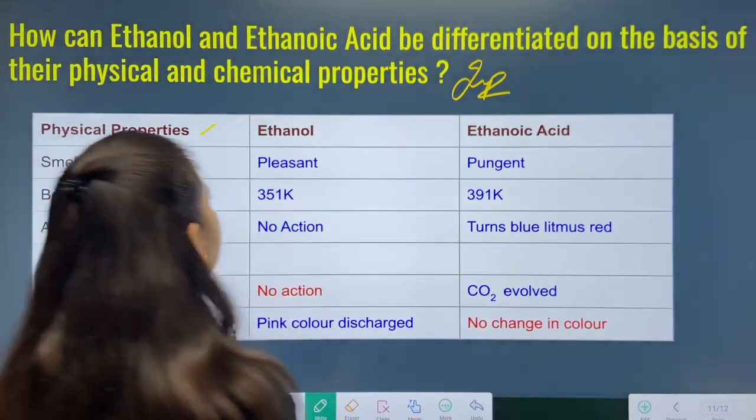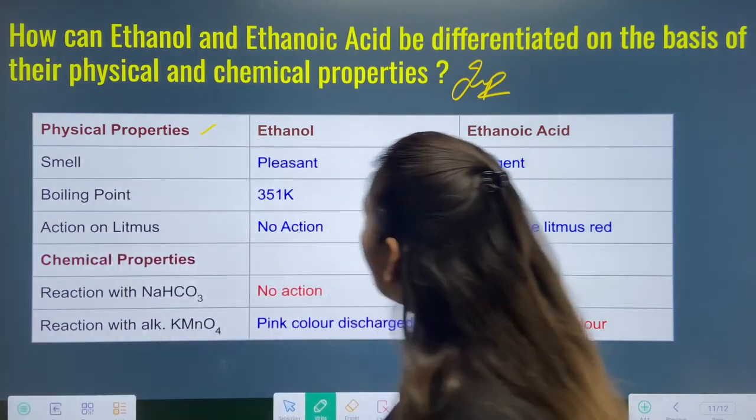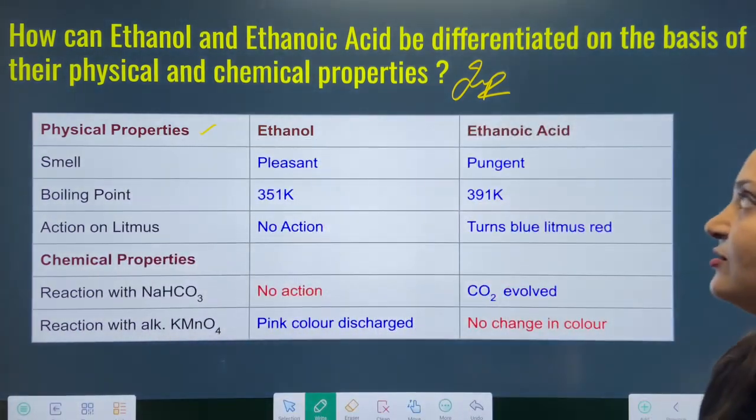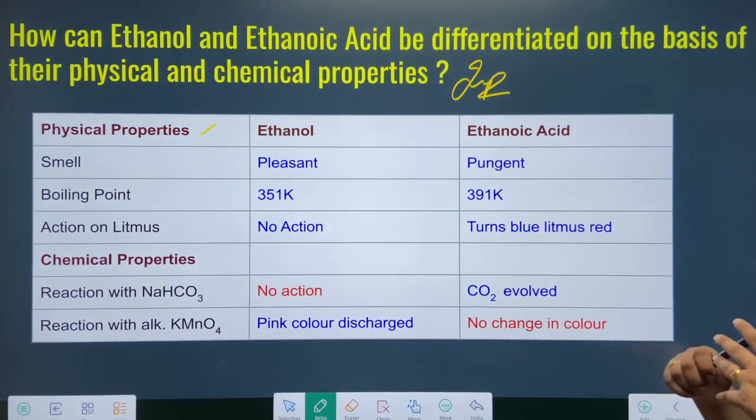So, we can distinguish ethanol and ethanoic acid and differentiate them on the basis of their physical and chemical properties.